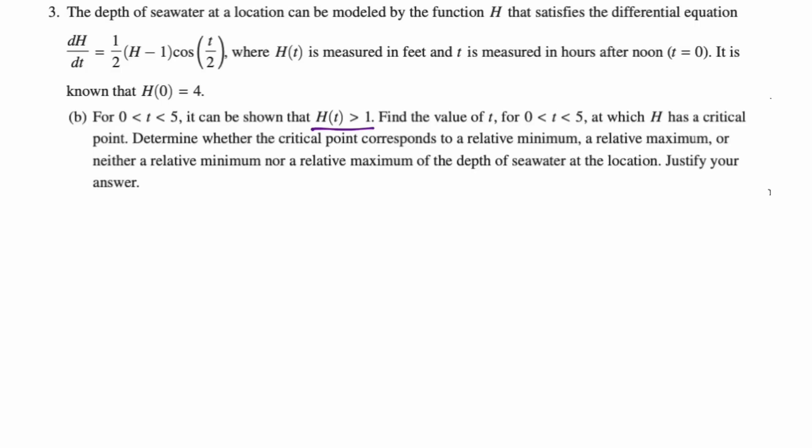Find the value of t between zero and five at which h has a critical point. So a critical point would be when dh/dt is equal to zero or undefined. But I think in this case, we're just looking for dh/dt to equal zero. Now we definitely know that h minus one is greater than zero. So nothing is going to come from there. So really, we would just be looking for where cosine of t over two is equal to zero.